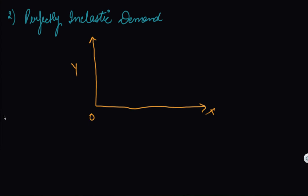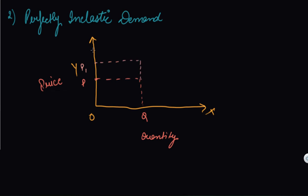Perfectly inelastic demand means elasticity equals zero. On the graph, the initial price is P and quantity demanded is Q. Even when the price changes — say to P1 or P2 — the quantity demanded does not change.